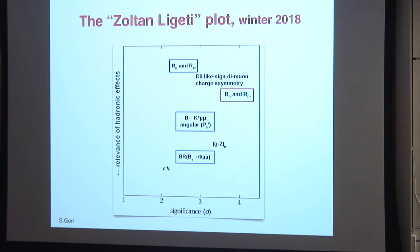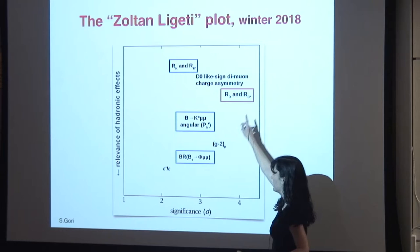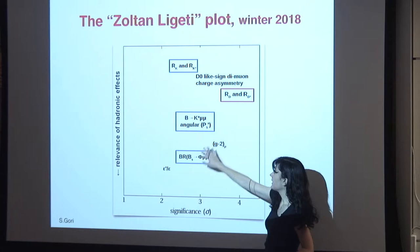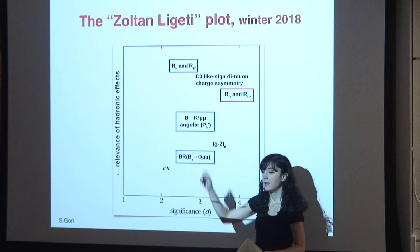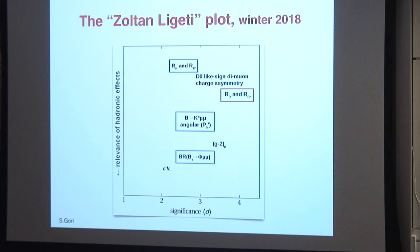Between 2016 and 2018, you see what went away and what stayed. Higgs to tau mu went away, but then we had not only RK but also RK*. For the rest of today, we want to discuss the anomalies highlighted in this slide. These are qualitatively different types of anomalies: in blue one set of anomalies, and in red another set, as we will explain.